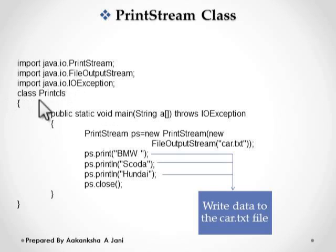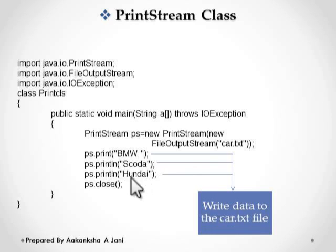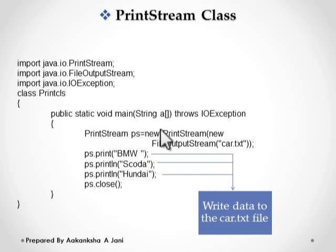Create one class named PrintCls. Create one object of PrintStream class ps by creating an anonymous object of FileOutputStream, passing the file name card.txt as a parameter. Then, using the PrintStream object, call the print method to write BMW stream into card.txt file. Then using the println method, we write Skoda and Honda into card.txt file. After writing data to the file, we close the PrintStream object using the close method.